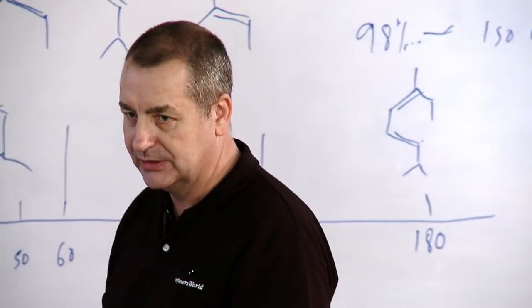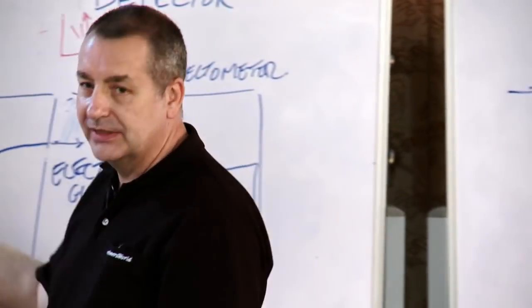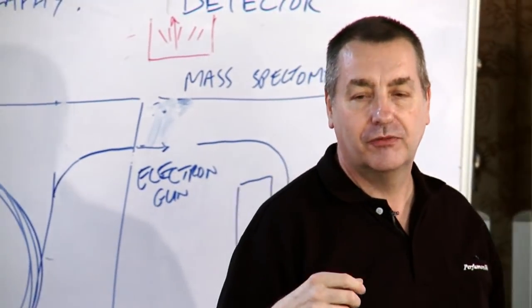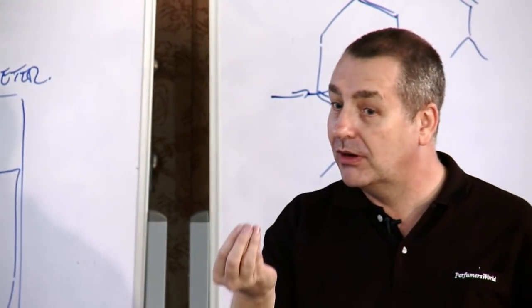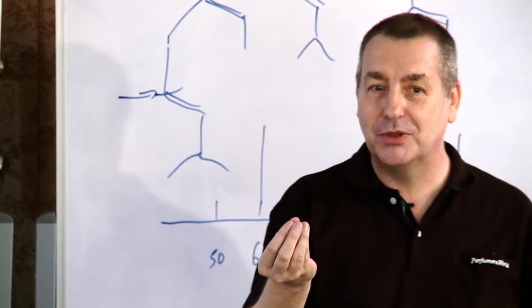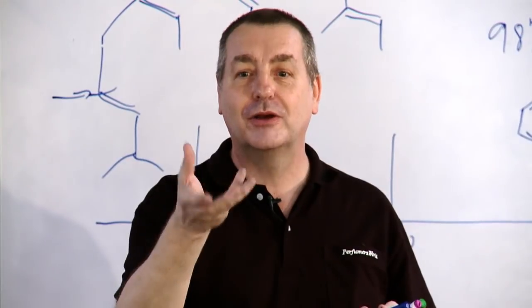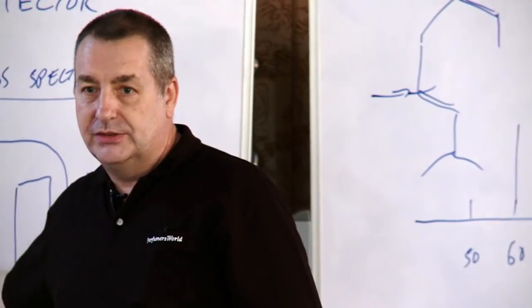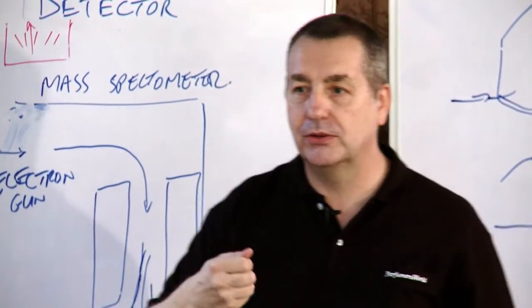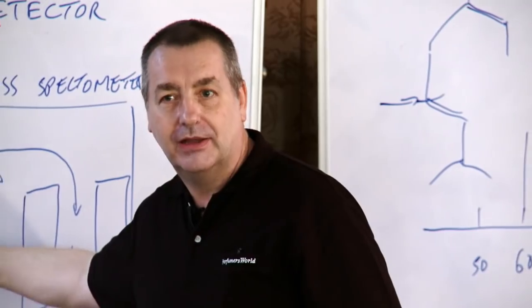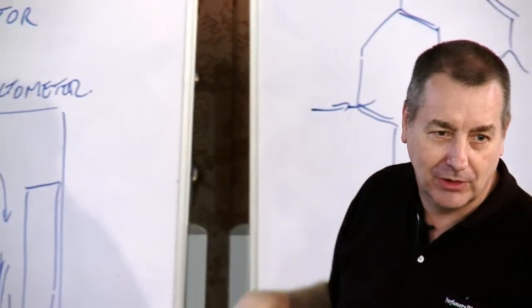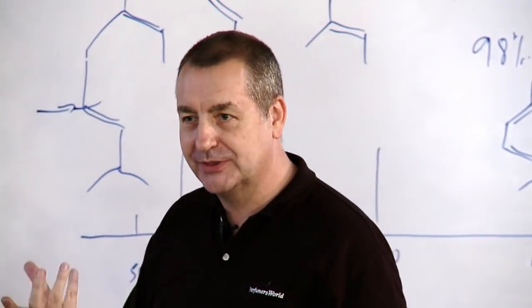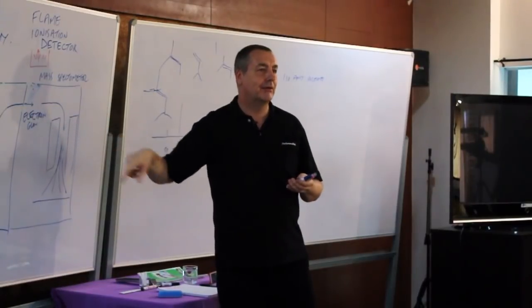There are two things that it has a weakness for. One is if the molecule can't be vaporized. So, furocumarins, the ones responsible for phototoxicity, are actually quite hard to do with GCMS, because they're fairly big molecules, and they don't really want to go around the column at all. If you get non-volatile components of absolutes, they sometimes don't want to come out.